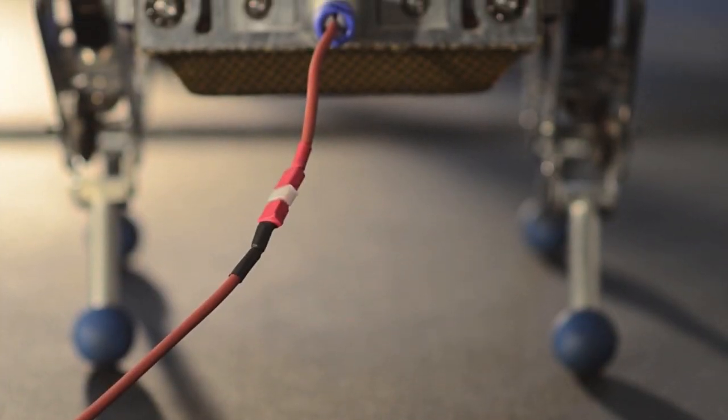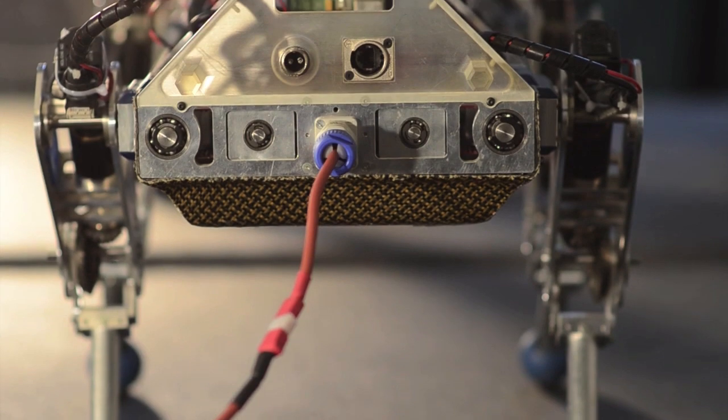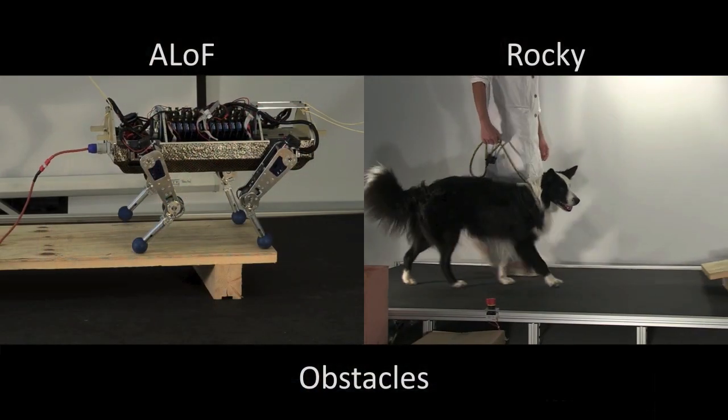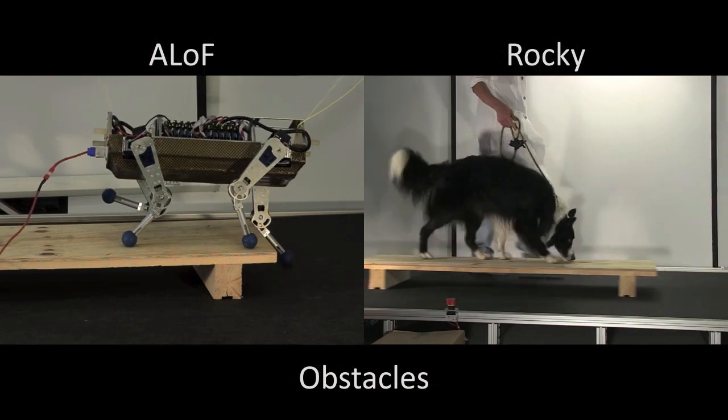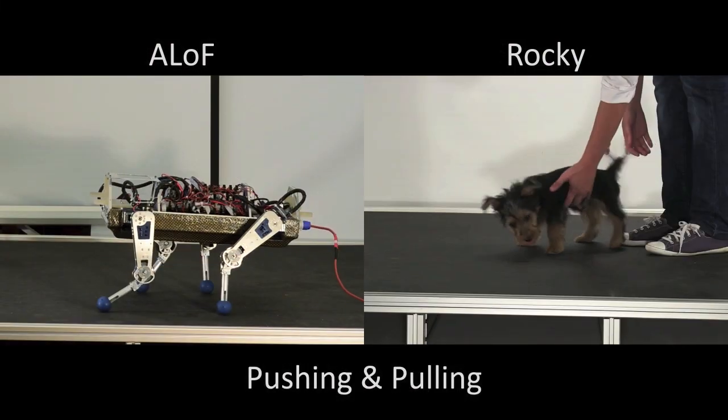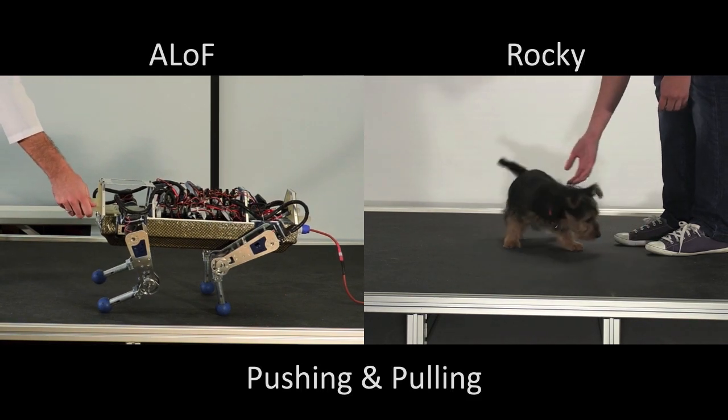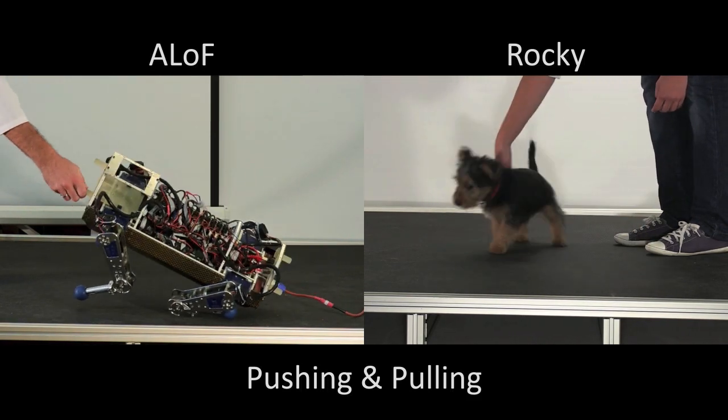All these maneuvers are relatively slow and thus created prior to application. In this state, ALOF is not programmed to react to unforeseen events. Additionally, since the robot is designed mechanically stiff, it behaves more like a table than like a dog.